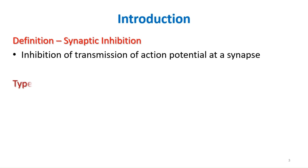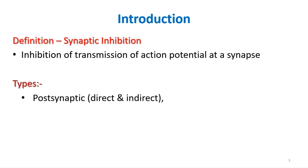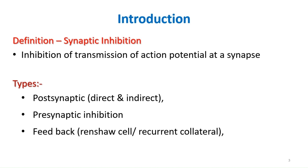The different types of synaptic inhibition are: postsynaptic inhibition, which includes both direct and indirect; presynaptic inhibition; feedback inhibition; and feed-forward inhibition. We will now see each one of them with explanation and diagrams.